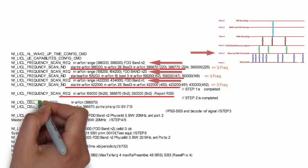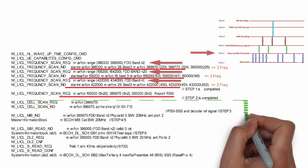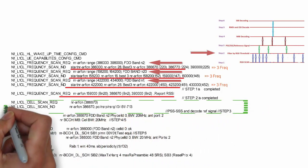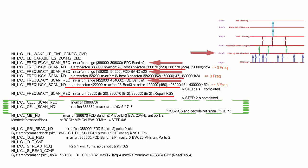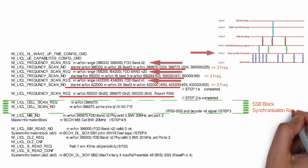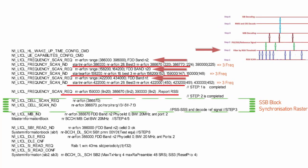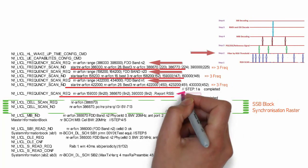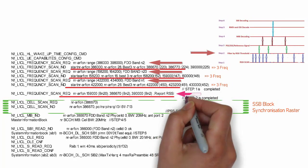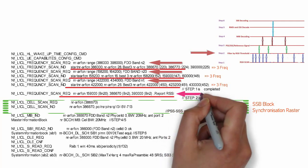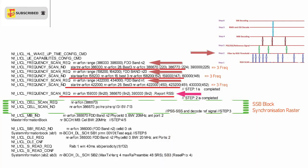Step 3 process is a little different from the LTE process and is more complicated — it will take time to understand. In Step 3, you will do the synchronization process and decode SSB blocks by scanning the synchronization raster. Keep these two terms in mind: SSB block and synchronization raster. From the Step 2 list of 3 frequencies, you will start the synchronization process one by one for all 3 frequencies.